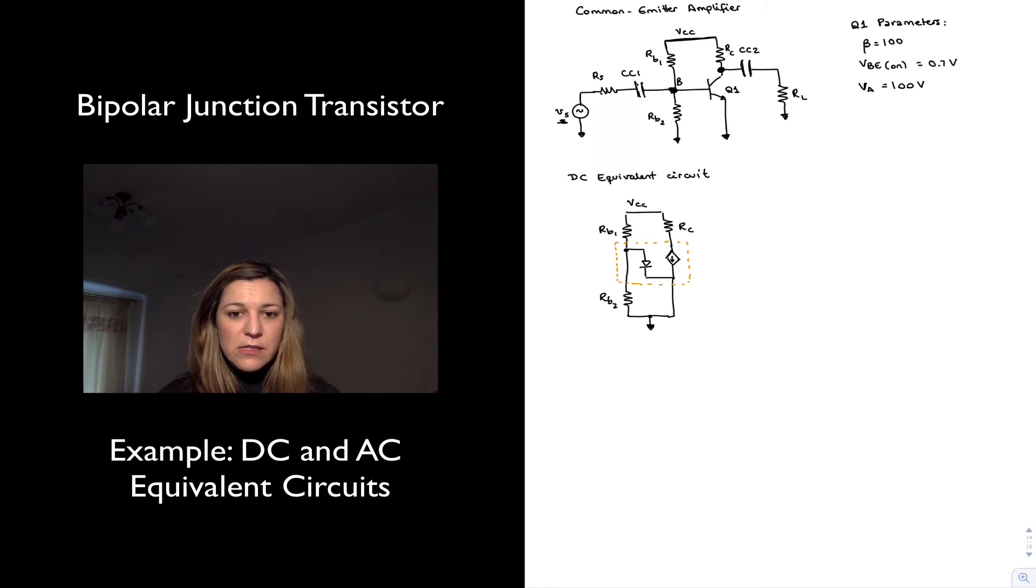When we're drawing the DC equivalent circuit, we need to replace those coupling capacitors with the DC model, and the DC model for a capacitor is an open circuit. A capacitor behaves as an open circuit to DC signals, and so what we have essentially here is an open circuit at the base and an open circuit at the collector. This is base, collector, emitter. So, that just means this is the entirety of our DC equivalent circuit.